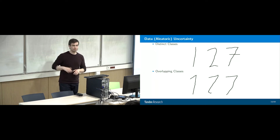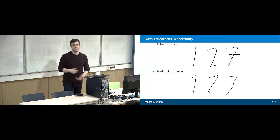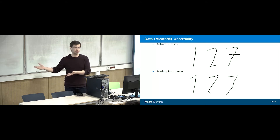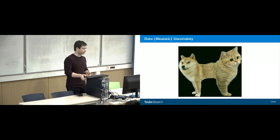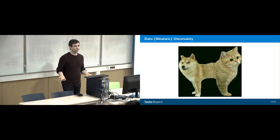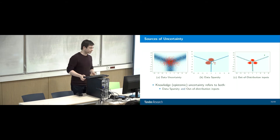Examples of data uncertainty: on top we have distinct letters one, two and seven. On the bottom we have letters one, two and seven which look like each other and are hard to distinguish — this is data uncertainty. Another example: we have a cat-dog hybrid, half cat, half dog. We don't know what it is. That's data uncertainty.